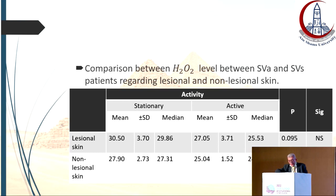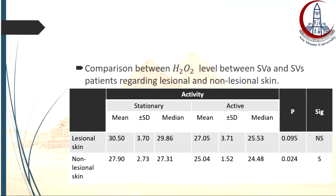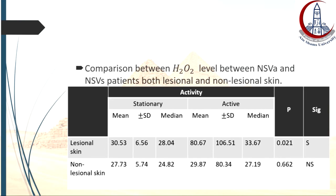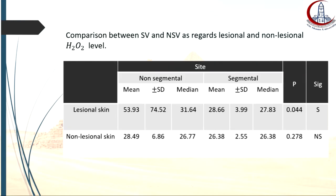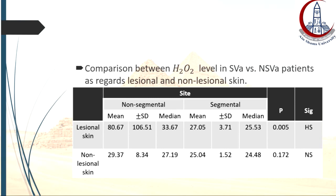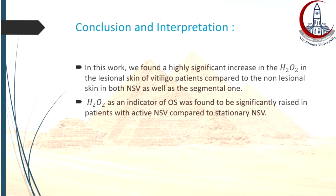Comparing active and stationary disease, there was a non-significant difference in H2O2 level in lesional skin between stationary and active segmental disease, while there was a significant increase in non-lesional skin of stationary compared to active segmental. In active non-segmental vitiligo compared to stationary non-segmental, there was a significantly increased H2O2 level in active compared to stationary non-segmental, while non-lesional skin showed a non-significant increase.